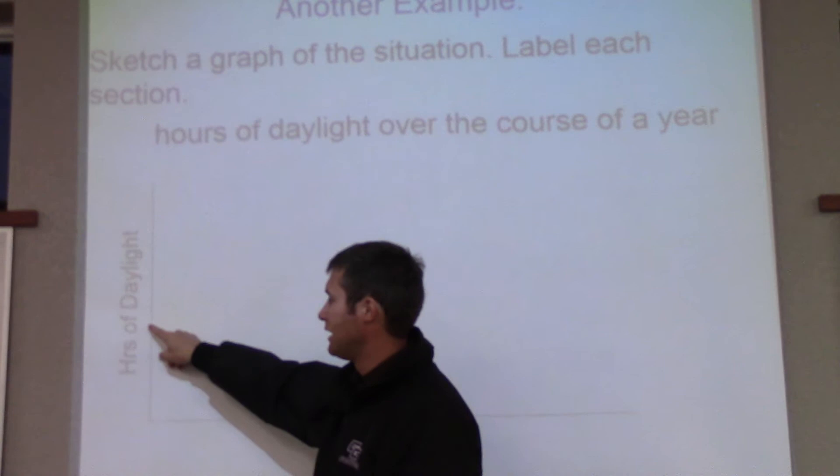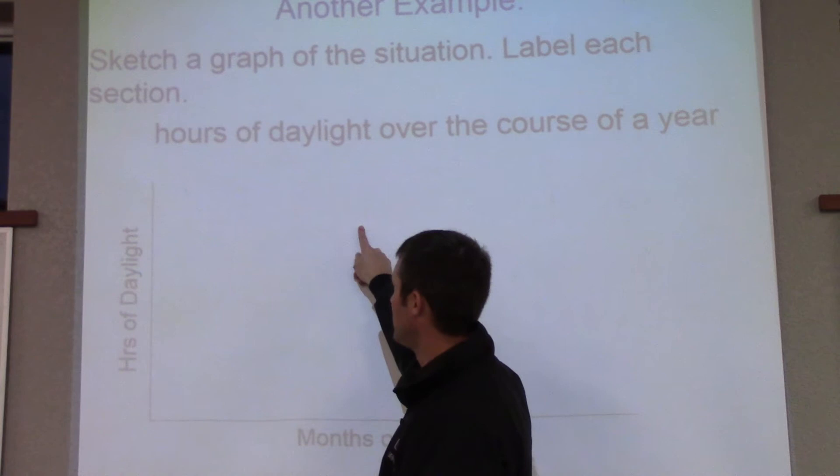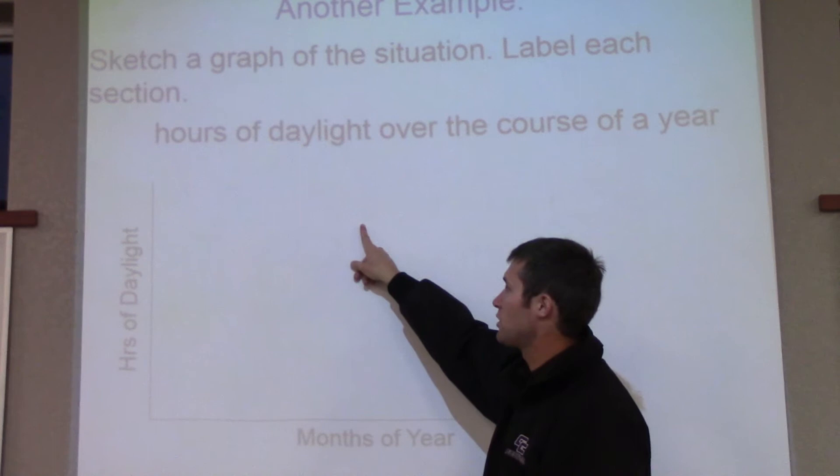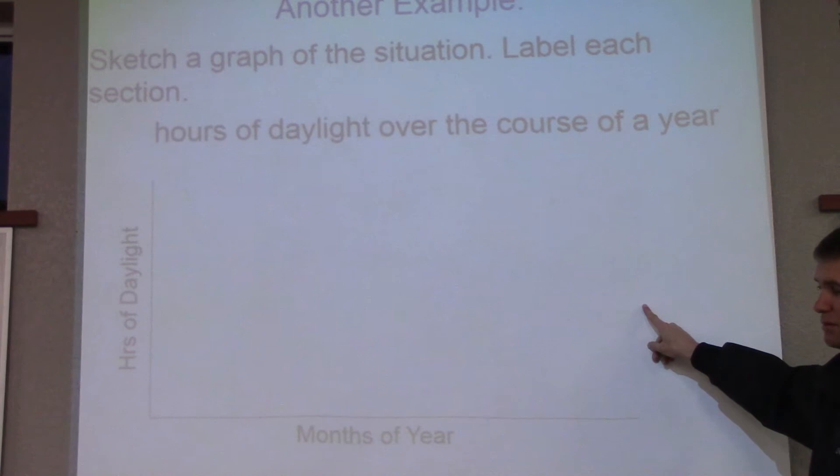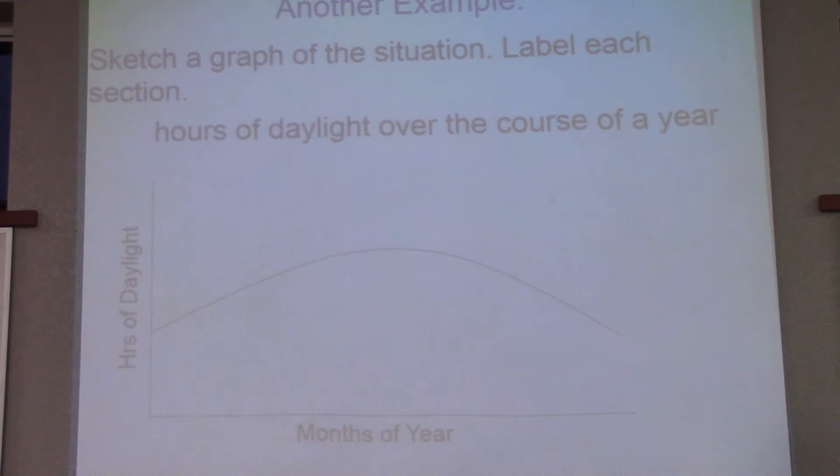And then as the year progresses, January, February, March, April, May, June. And actually, June is the, you have your most days of sunlight. So you get to June, which is about halfway through the year. And then, once you hit June, then it starts losing hours of daylight. Very slowly, a couple minutes at a time, until you get to December. In which December and January are pretty similar. So it looks something like that. You'd have an arc.